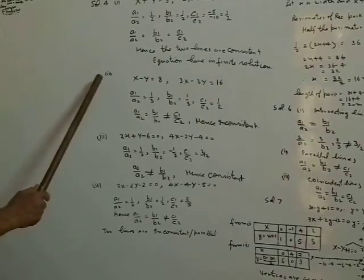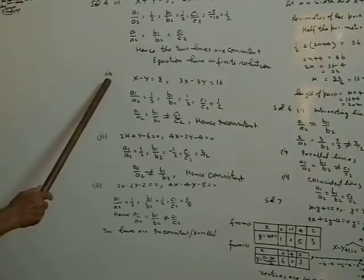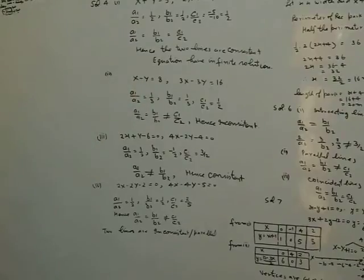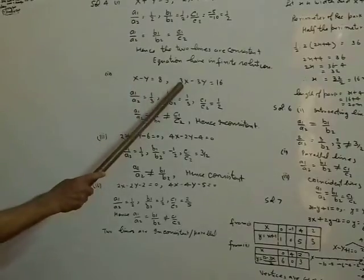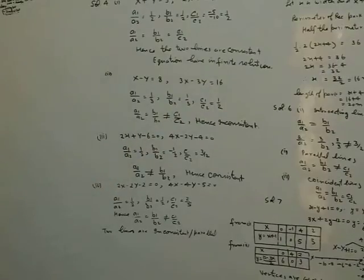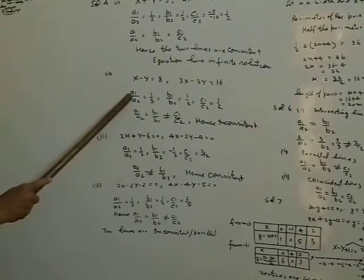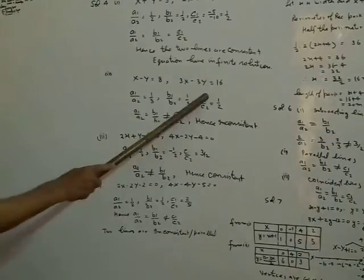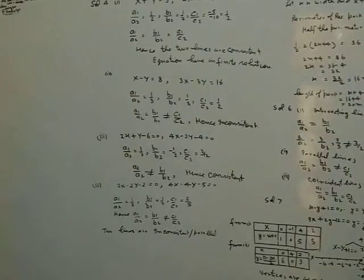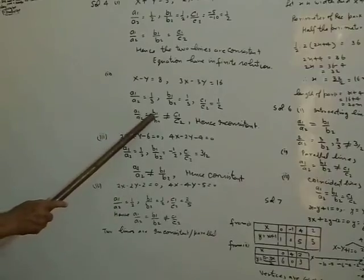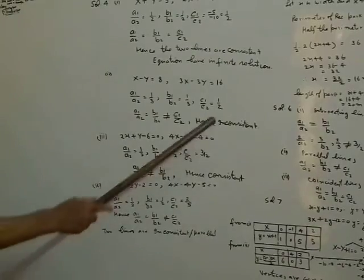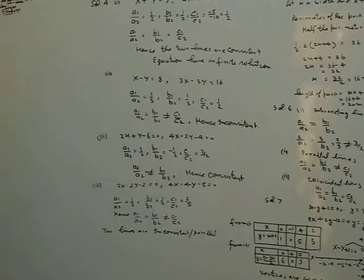The second part of solution 4: the two equations are x minus y equal to 8 and 3x minus 3y equal to 16. So a1 upon a2 is equal to 1 upon 3, b1 upon b2 is equal to 1 upon 3, and c1 upon c2 is equal to half. Since a1/a2 equals b1/b2 but is not equal to c1/c2, the two lines are inconsistent.